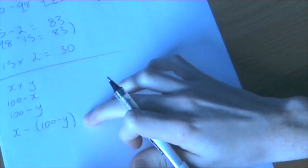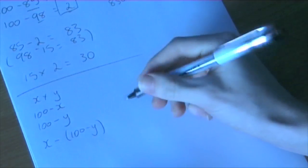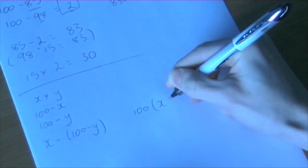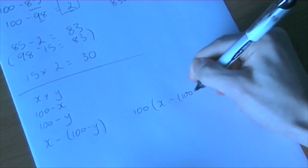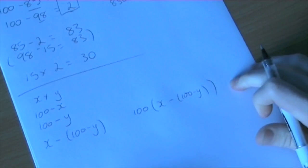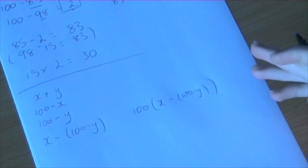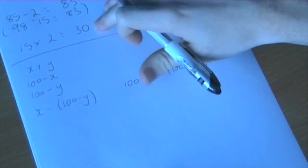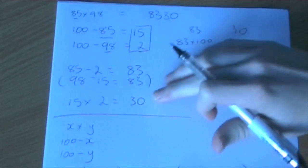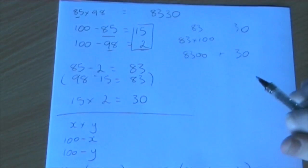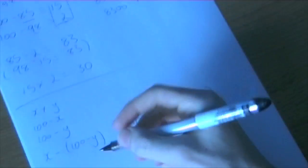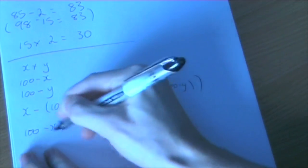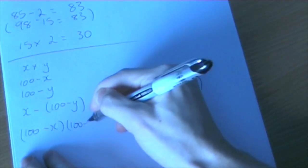So this here represents the 83. So we would multiply this by 100. So that's the first part of the sum. Right, the next part was to get the 30. Now we got that by doing 15 times 2, which was just the results of the two subtractions multiplied together. So with algebra, it's going to be (100 minus x) multiplied by (100 minus y).